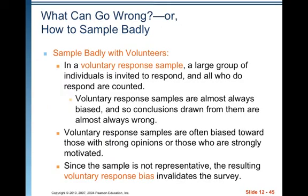How to sample badly. In a voluntary response sample, a large group of individuals is invited to respond and all who do respond are counted. Voluntary response samples are almost always biased, so conclusions drawn from them are almost always wrong. They are often biased toward those with strong opinions or those who are strongly motivated — usually strong negative opinions, because those people have an axe to grind and can't wait to express their opinion. If you're perfectly happy or ambivalent about something, you're not likely to find it worth your time to voluntarily respond. Since the sample is not representative, the resulting voluntary response bias invalidates the survey.